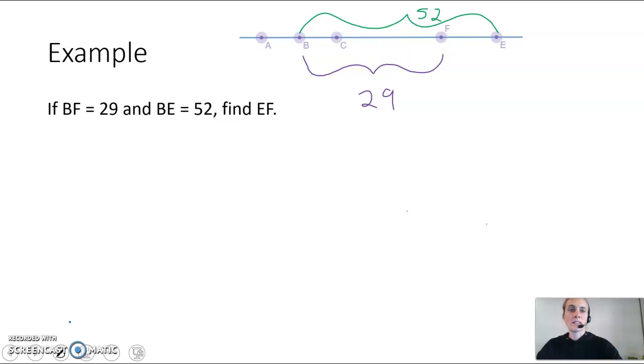So we want to find EF. Well, EF would be that little piece that we have left over. When we look at the biggest part, that would be BE, and that's 52, and BF sits inside of it, and FE sits inside of it. Specifically, point F is between B and E.